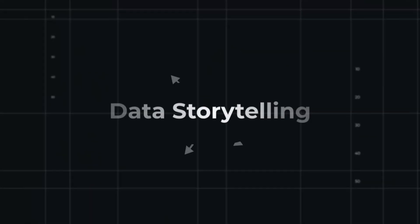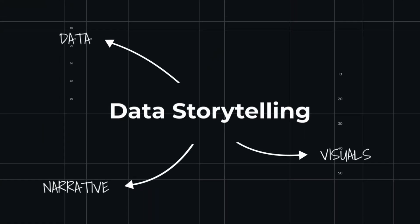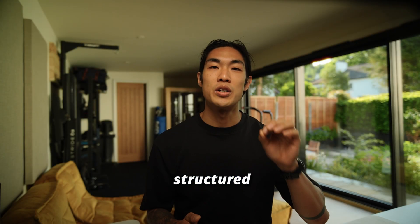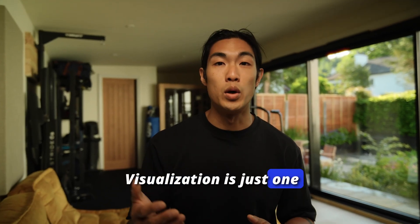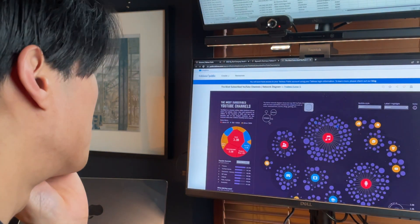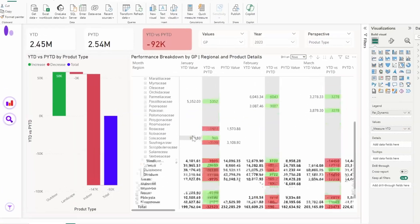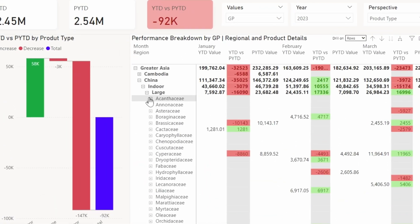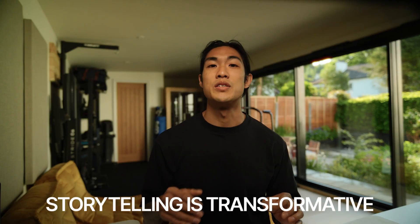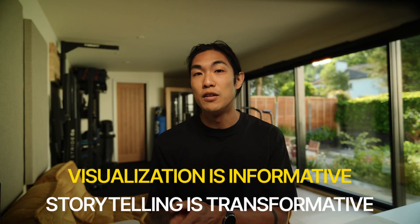Data storytelling combines data, visuals, and narrative to communicate a complete message, guiding the audience through a coherent, structured narrative with context. Visualization is just one component of storytelling. It's the narrative aspect that adds the context to transform your simple data point into meaningful insights — which is why storytelling is transformative versus visualization, which is informative.